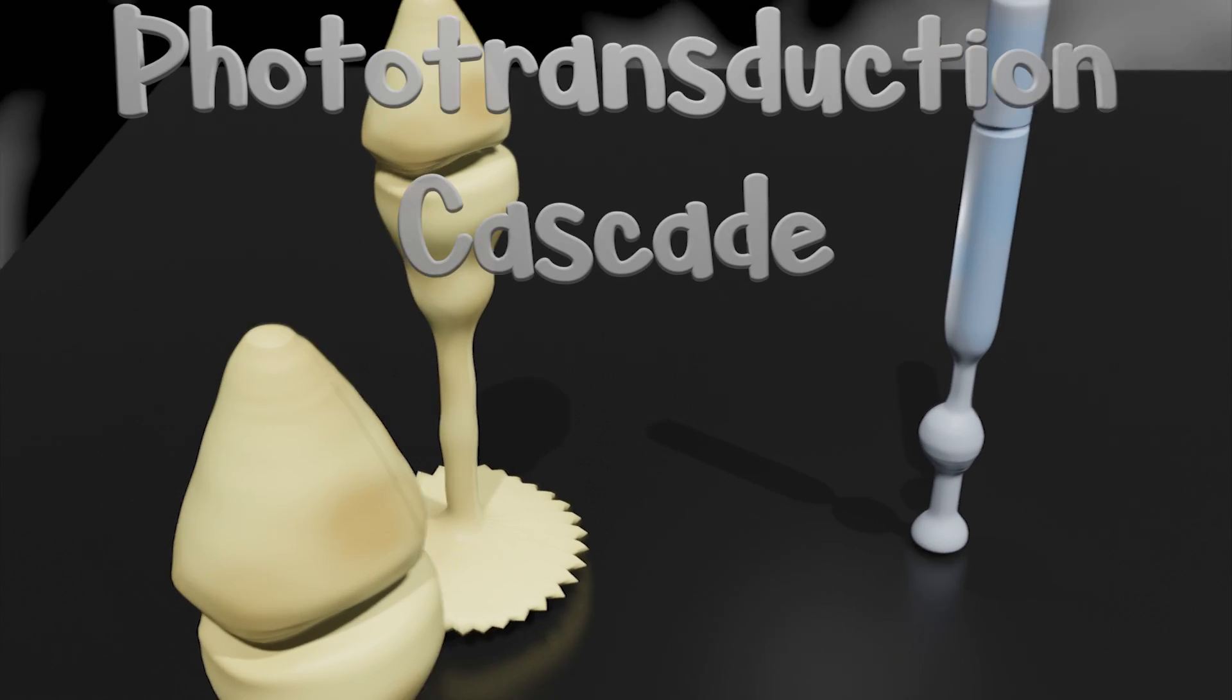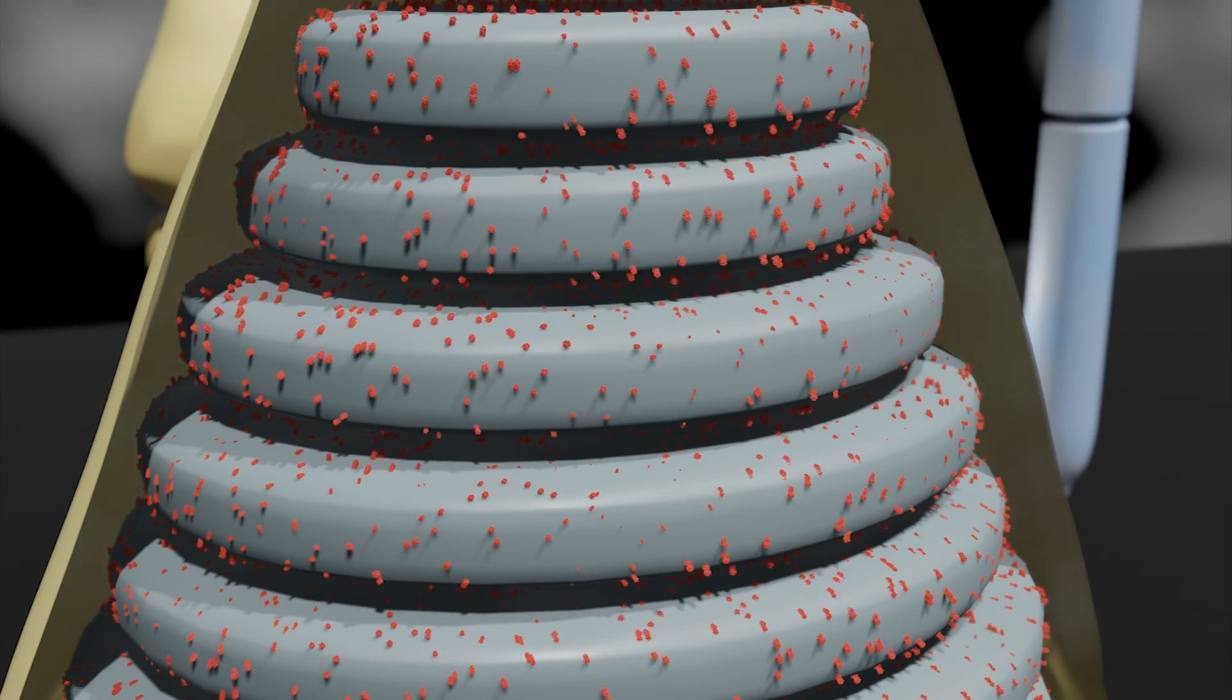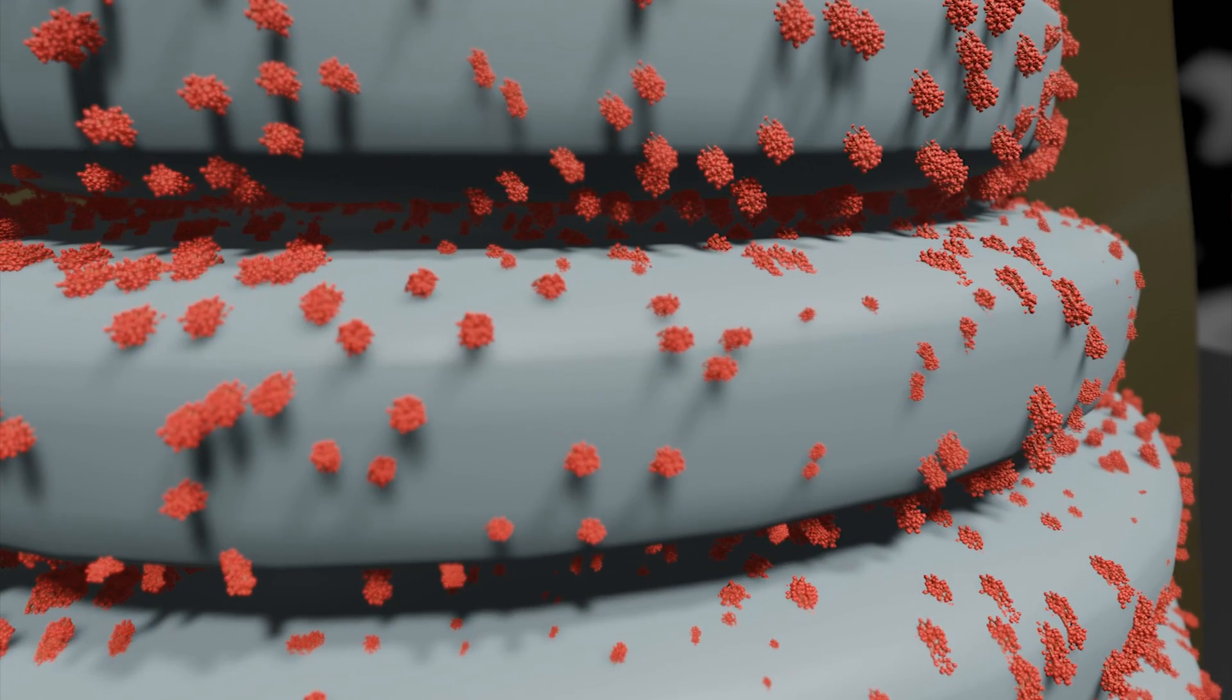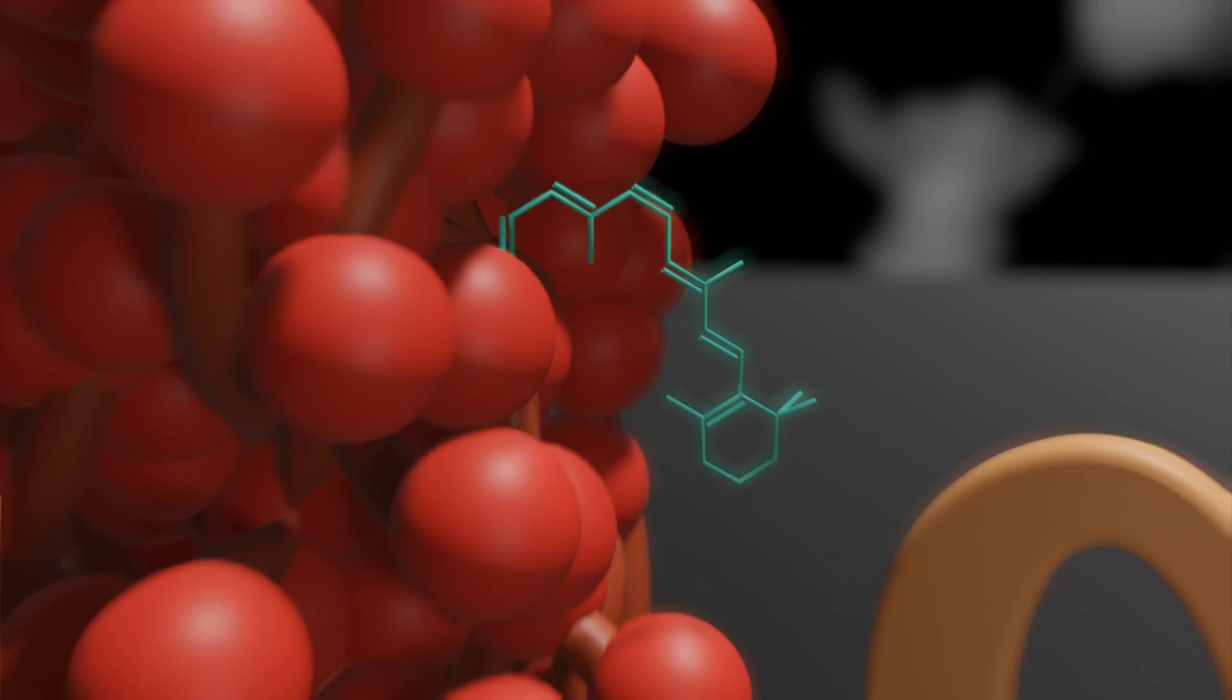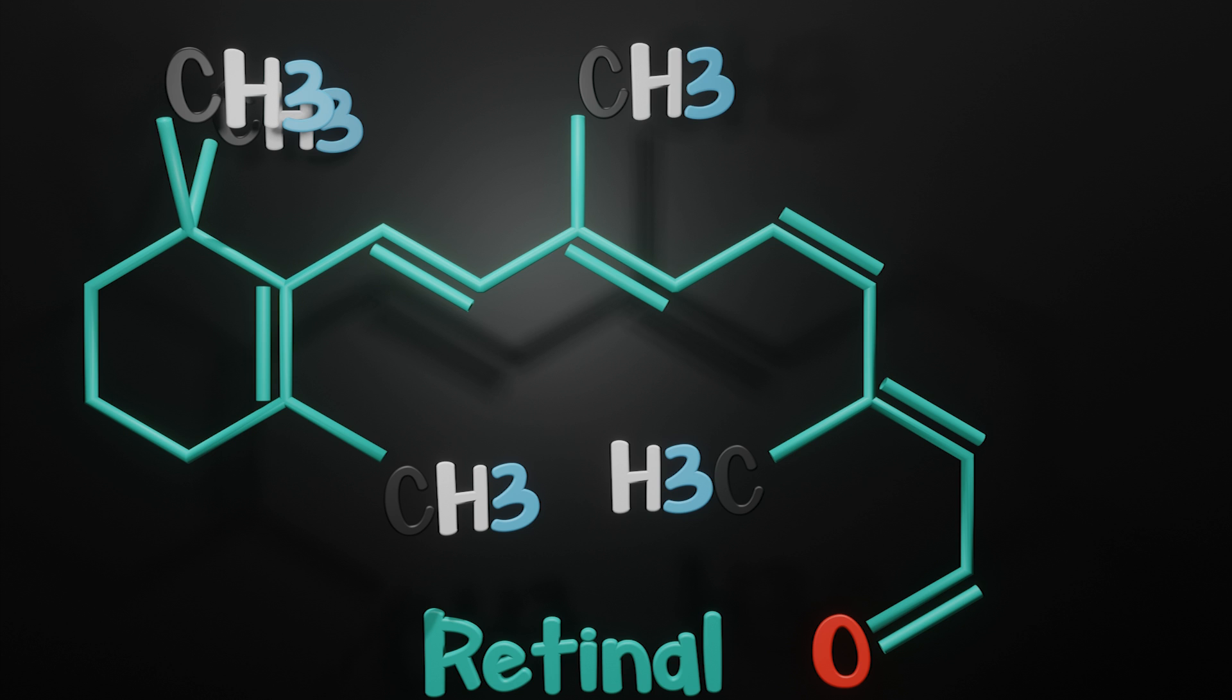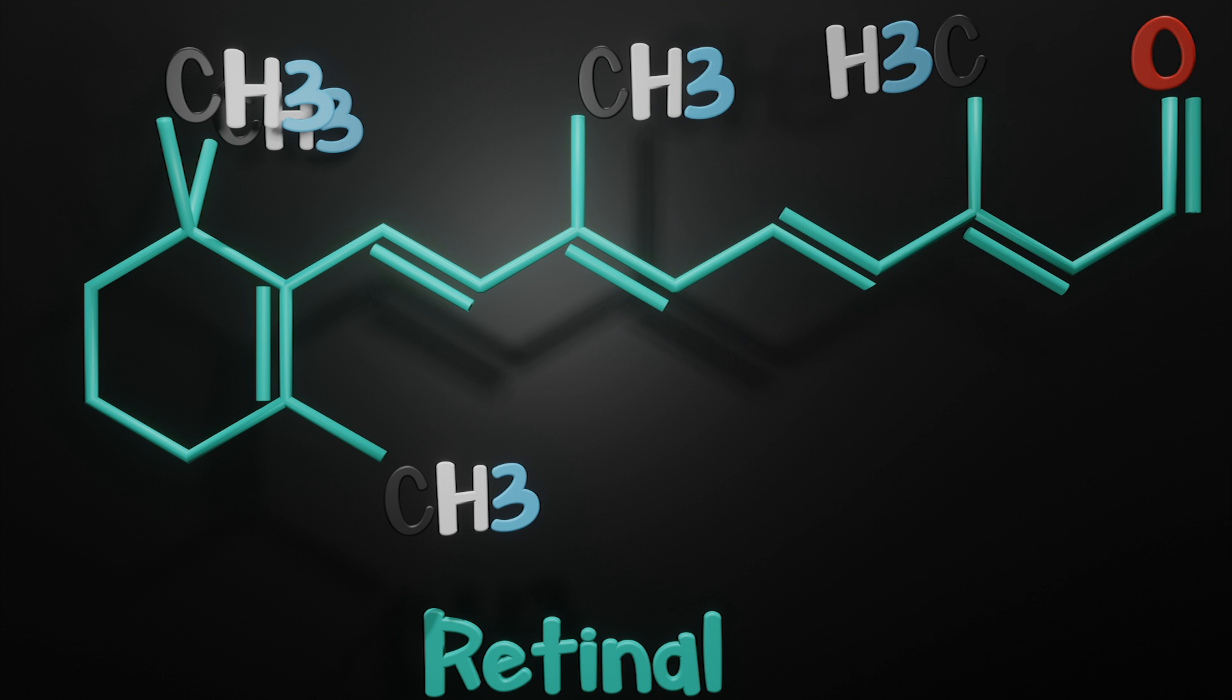Within rods and cones are hundreds of membrane discs. And within the surface of these membranes are countless more pigment proteins called opsins. Binded to one of the amino acids of this protein is a chromophore called retinol. Retinol is our antenna. Normally, it looks like this. But when a photon or light of the correct frequency comes along, it can excite this double bond and cause retinol to rotate and change shape into this.